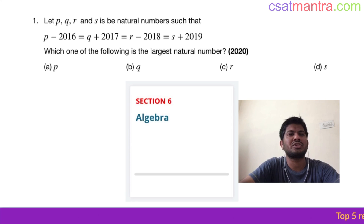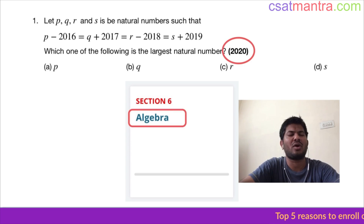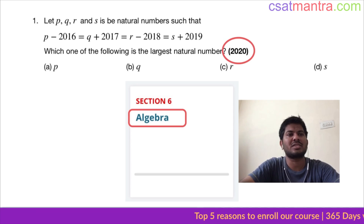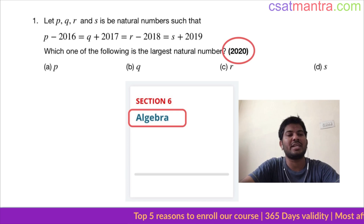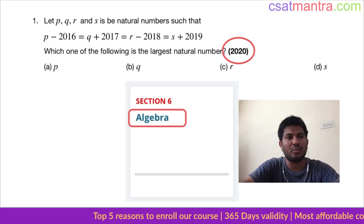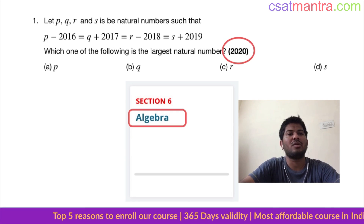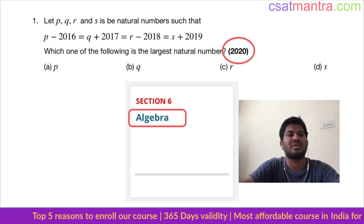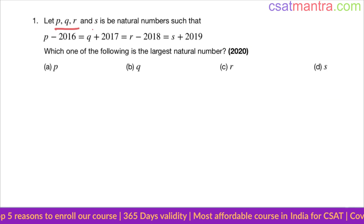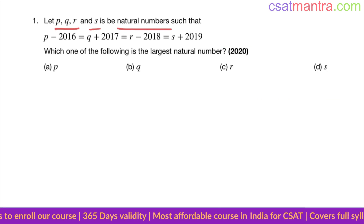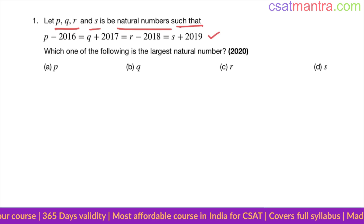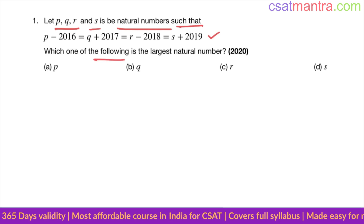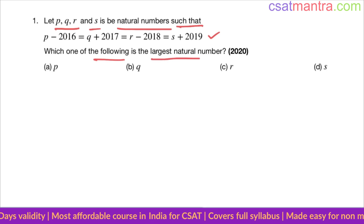Namaskaram friends. This question is asked in 2020, based on algebra — a very interesting and easy question. This concept will be useful in solving statement problems, a very important concept. Now let's solve this question: let p, q, r and s be natural numbers such that the given equation holds. Which one of the following is the largest natural number?